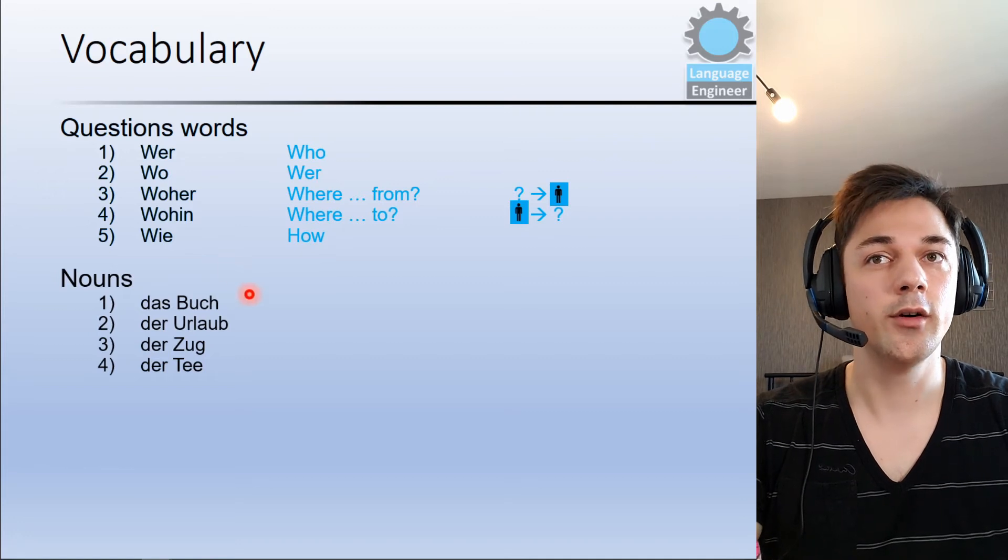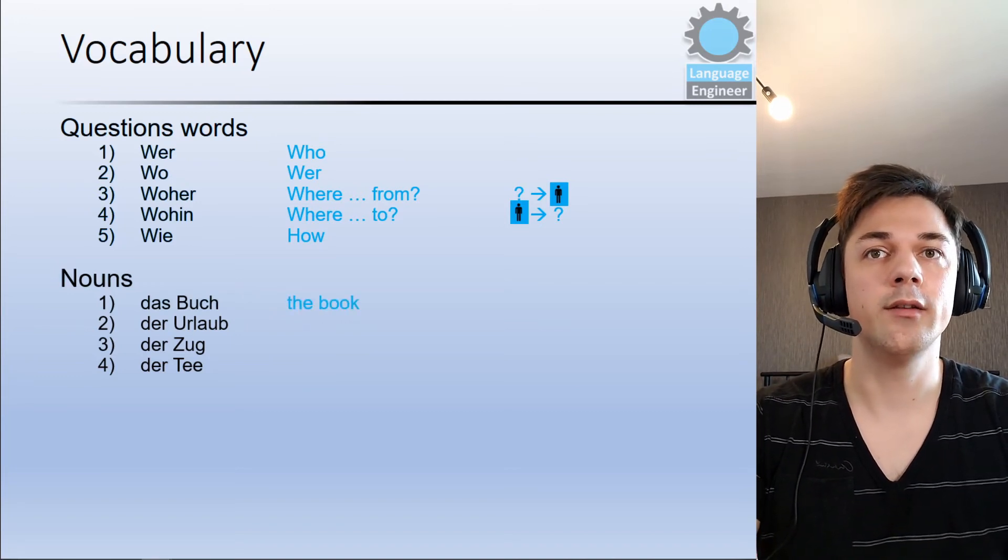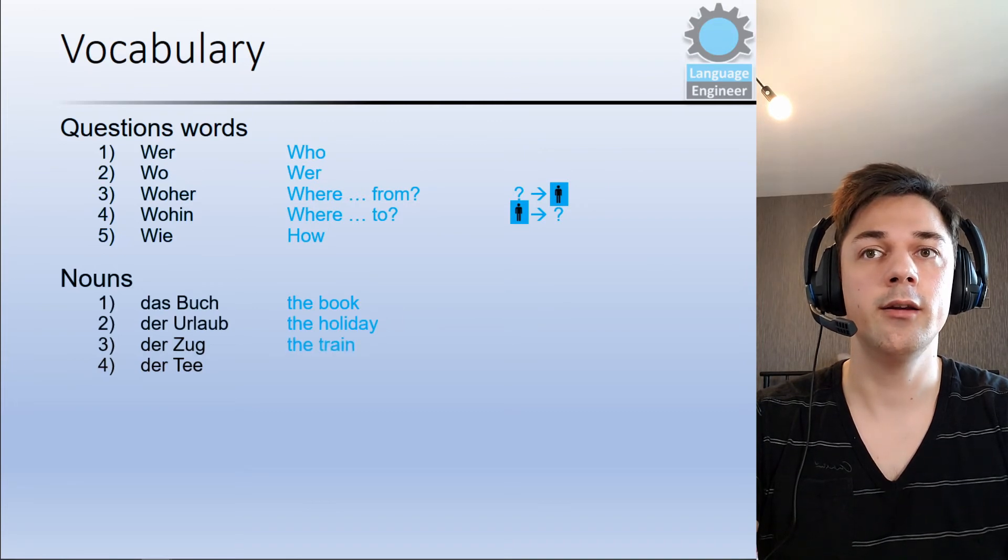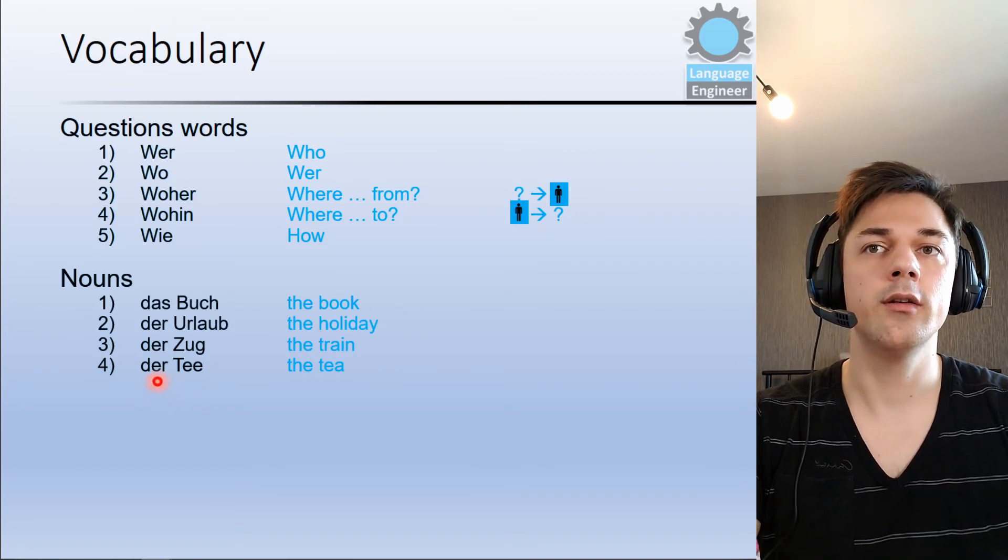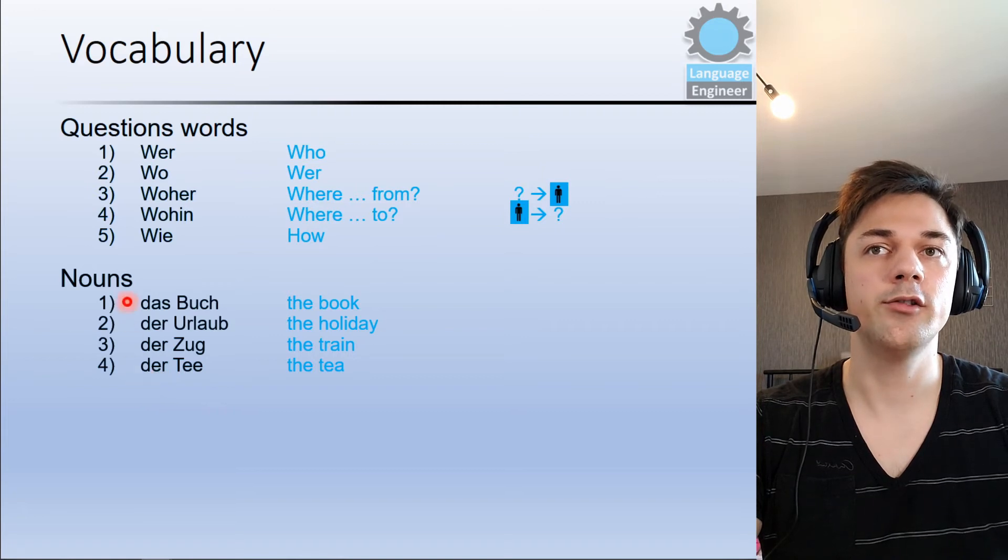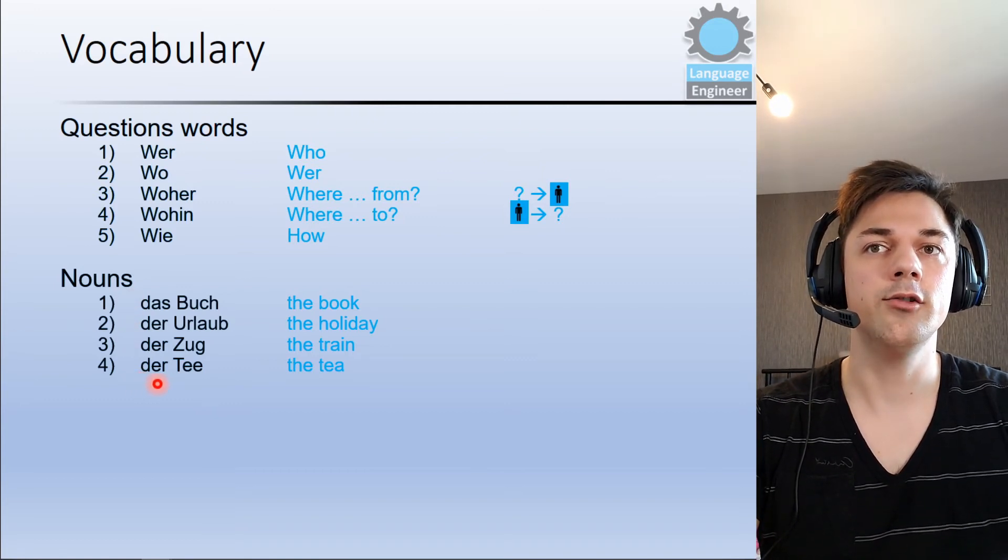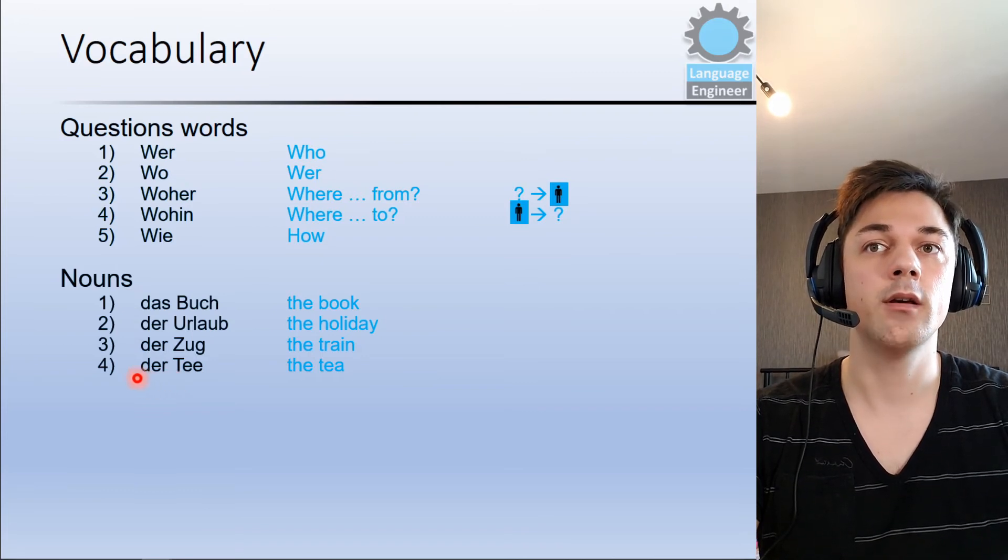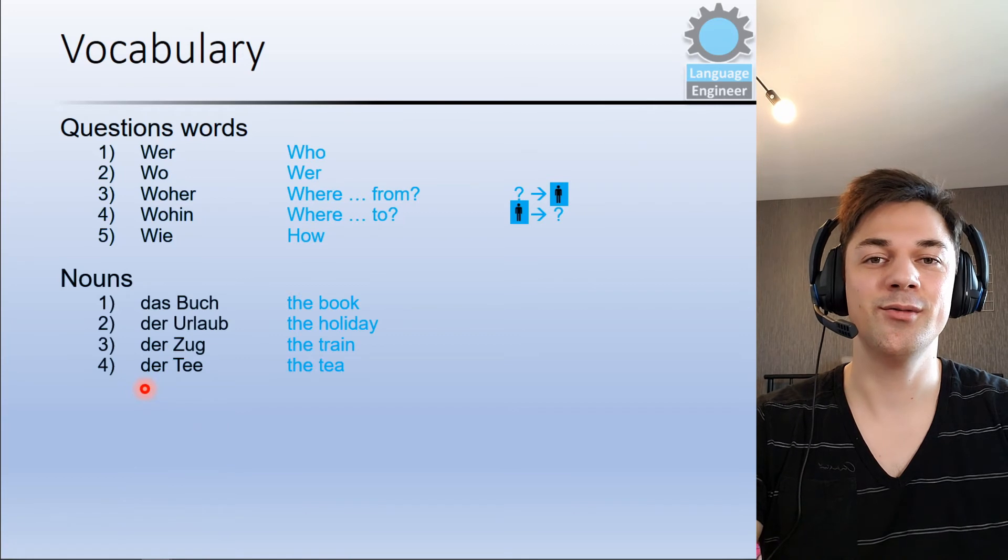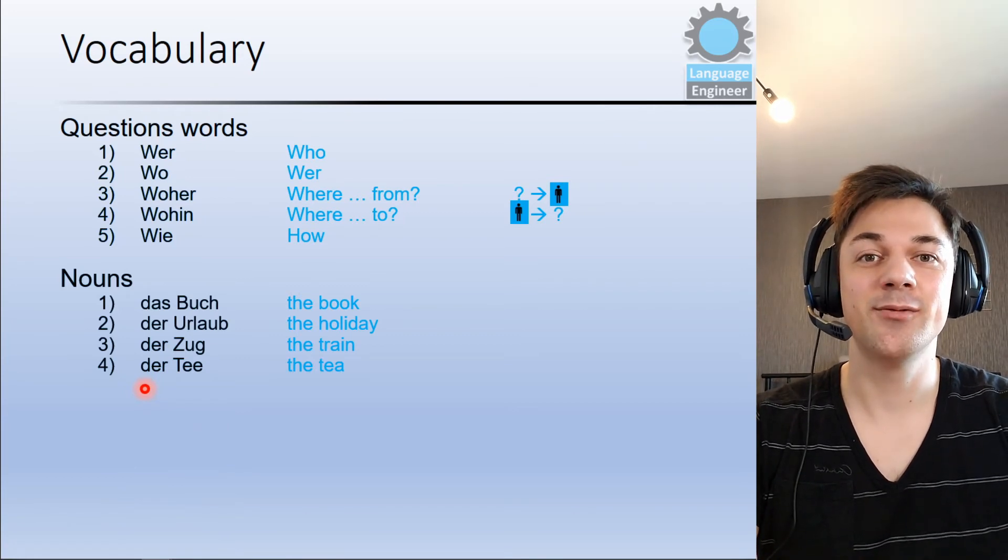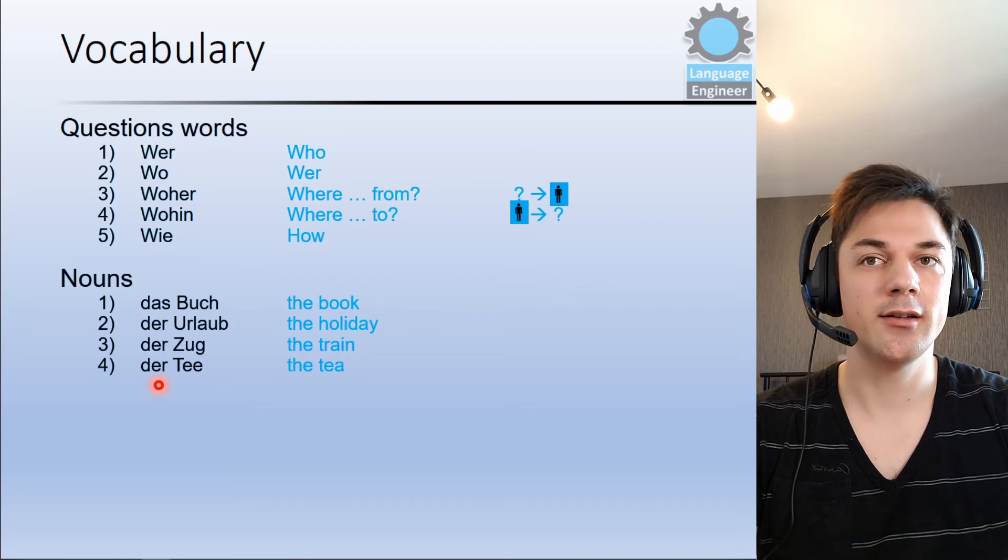Then we have some nouns which we also use in lesson 3. Das Buch means the book. Der Urlaub means the holiday. Der Zug means the train. And der Tee means the tea. And what you need to pay attention to is the article. You need to remember all the genders here because in the German language we have three. We have der, die, das and each noun has a different gender. So you need to memorize and study all of them. But don't be afraid, you will get used to it. So now maybe you will think, wow, I need to learn all the genders for each noun. In the beginning maybe you think it's challenging but after some time you will get used to it and it's normal.